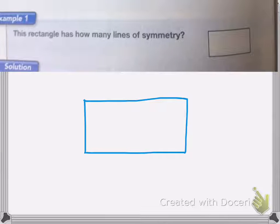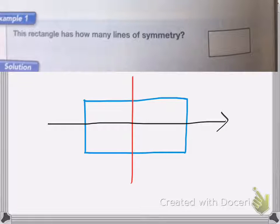For example, my first line of symmetry is going to be right down the middle. My shape looks the same on the left and the right. Then there's another line of symmetry and that one goes this way because it looks the same from the top and the bottom. A rectangle has two lines of symmetry.